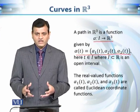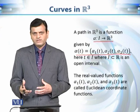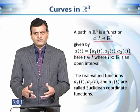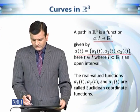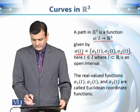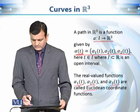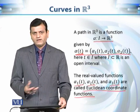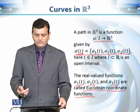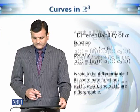In this particular example the parameter t was time, but t could be any other physical or mathematical quantity we choose. The function alpha has three components alpha₁, alpha₂, alpha₃, which are real-valued functions also known as Euclidean coordinate functions, because they provide the coordinates of the trajectory of the bird or any other moving object in R³.